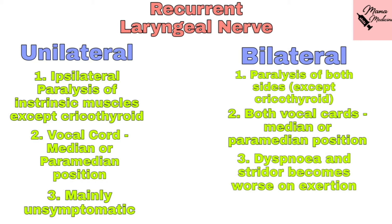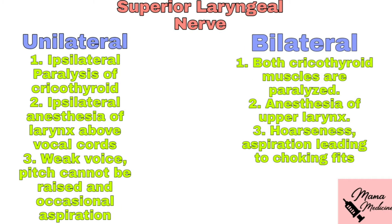In bilateral paralysis, both sides of the muscles except cricothyroid are affected. Both cords lie in a median or paramedian position, and dyspnea and stridor are seen because the airway is inadequate. The dyspnea and stridor become worse on exertion or during an attack of acute laryngitis.